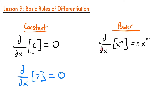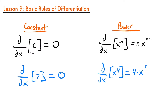Next is the power rule, which says that if we take a derivative of a variable such as x to a power n, we multiply that n by x and then subtract one from the exponent n. For example, the derivative of x to the fourth is 4 times x, and then subtracting one from the exponent gives 4 minus 1, which simplifies to 4x to the third power.